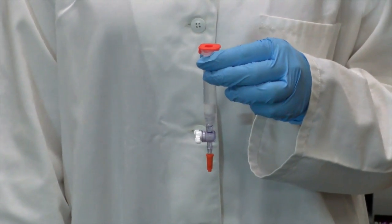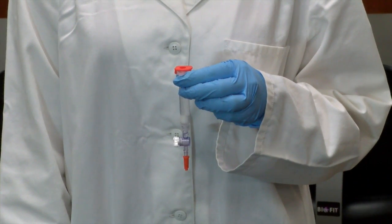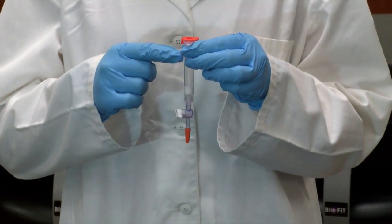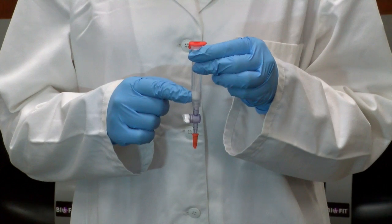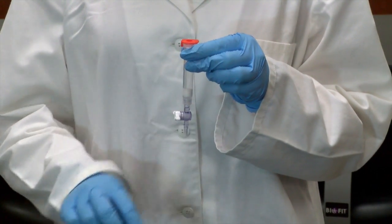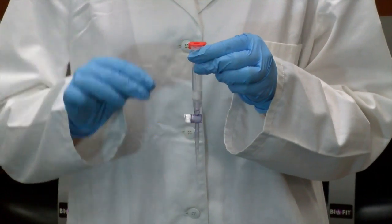These columns should be stored vertically and never be allowed to dry out. Each column will contain storage buffer and a white resin bed. The resin beads have been coated with a hydrophobic coating. There is a stopcock valve that controls the draining of the liquid in the column.